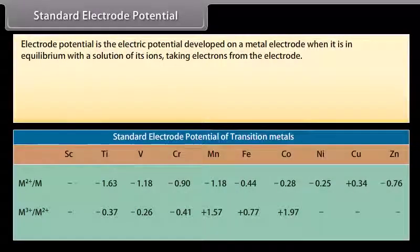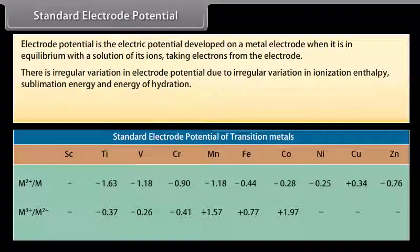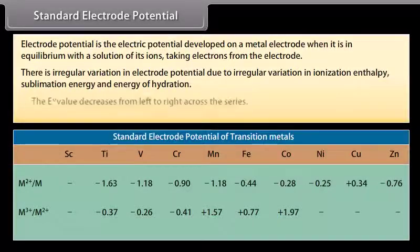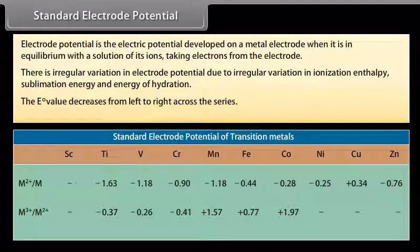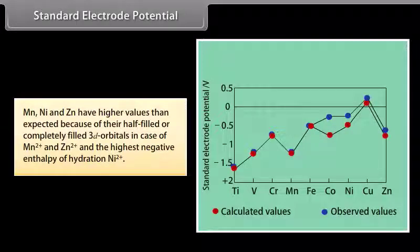Electrode potential is the electric potential developed on a metal electrode when it is in equilibrium with a solution of its ions. There is irregular variation in electrode potential due to irregular variation in ionization enthalpy, sublimation energy, and energy of hydration. The E0 value decreases from left to right across the series. Manganese, nickel, and zinc have higher values than expected because of their half-filled or completely filled 3D orbitals in Mn²⁺ and Zn²⁺, and the highest negative enthalpy of hydration for Ni²⁺.